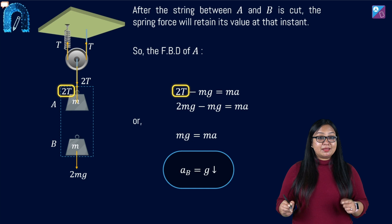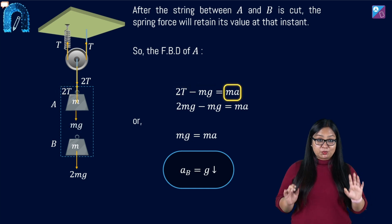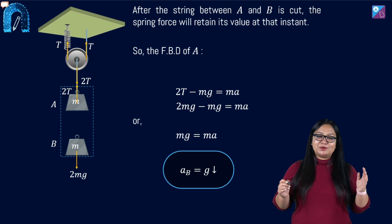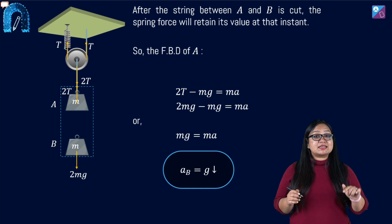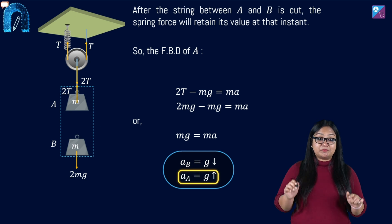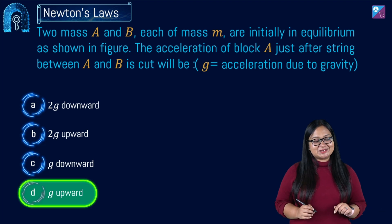We get the value of acceleration as G. So acceleration is G vertically upwards. So I can look at the options and say option number D is the correct answer.